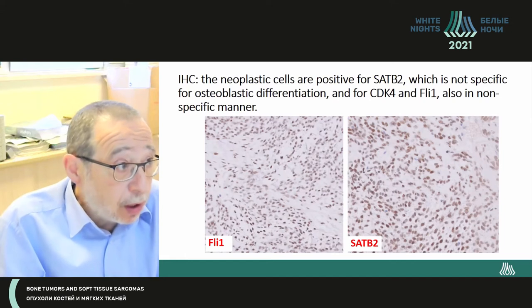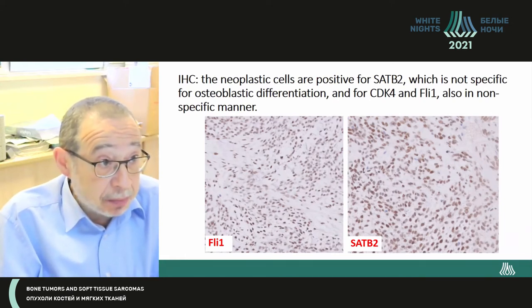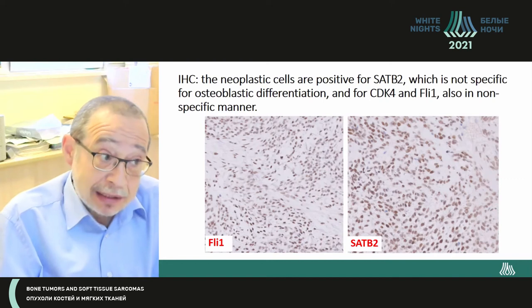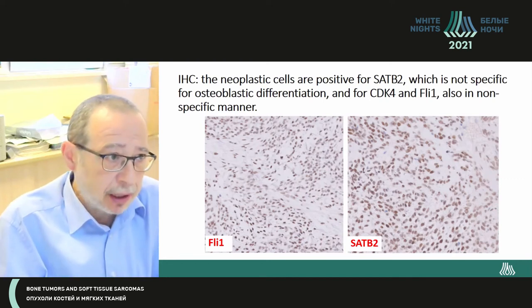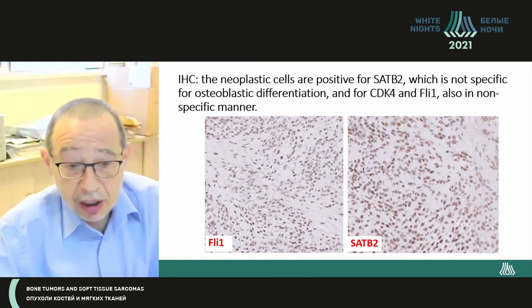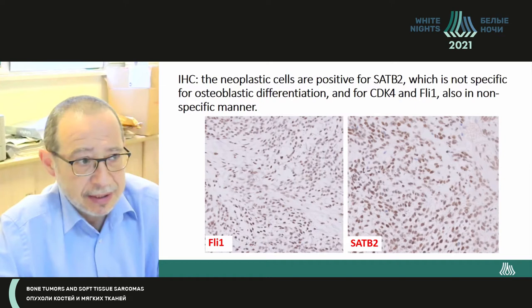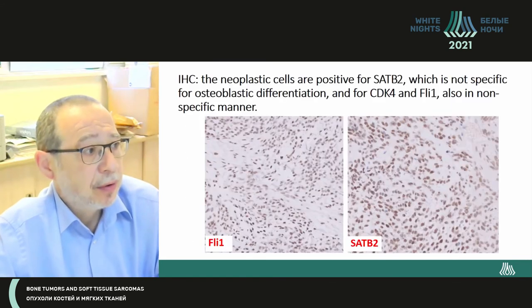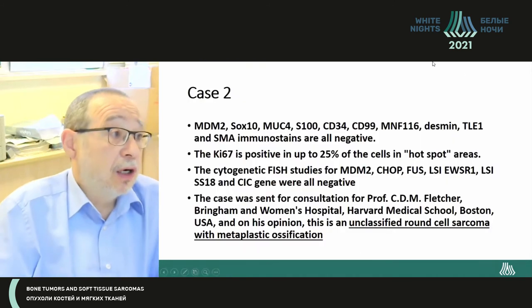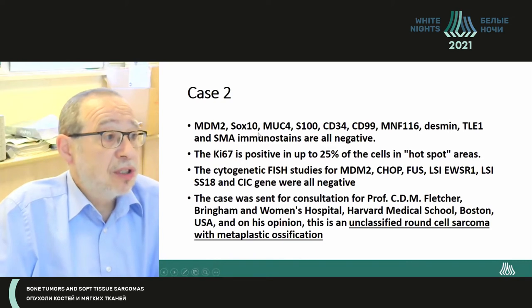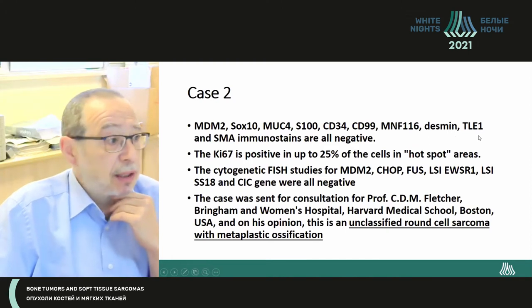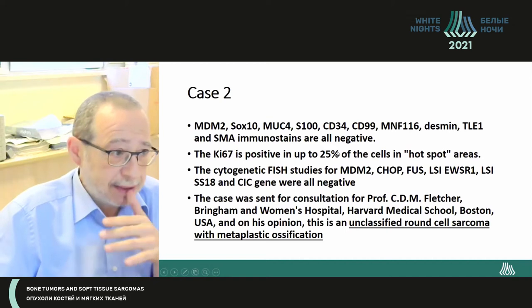On immunohistochemistry, the neoplastic cells were positive for SATB2, FLI-1, and CDK4 — considered a nonspecific pattern. A wide panel of markers was tested, all negative. We tested MDM2, SOX10, MUC4, S100, CD34, CD99, MNF116, Desmin, TLE1, and SMA — all negative.